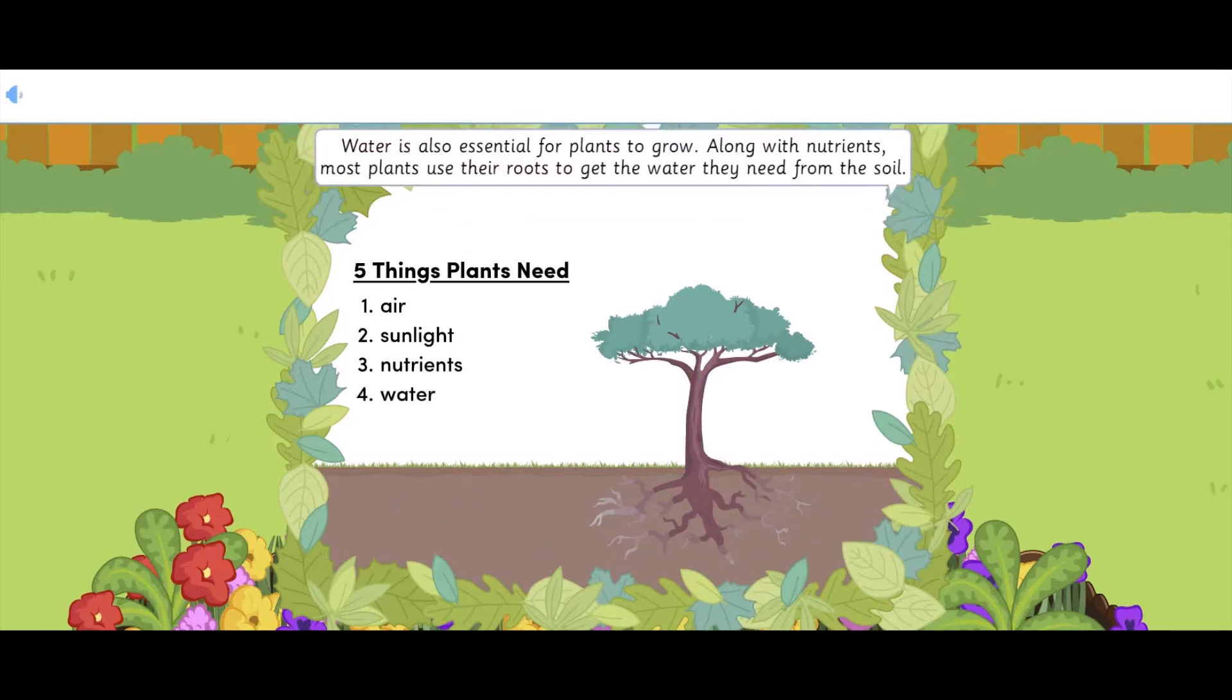Water is also essential for plants to grow. Along with nutrients, most plants use their roots to get the water they need from the soil. Amazing!